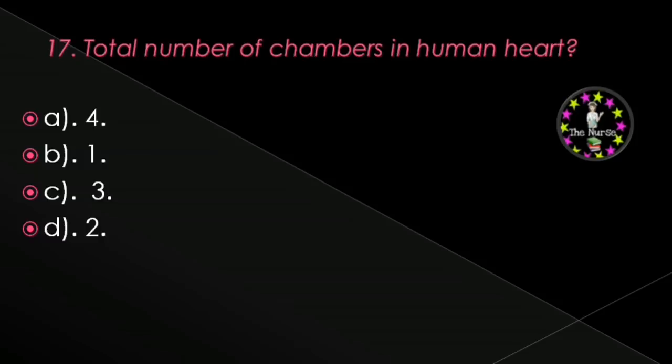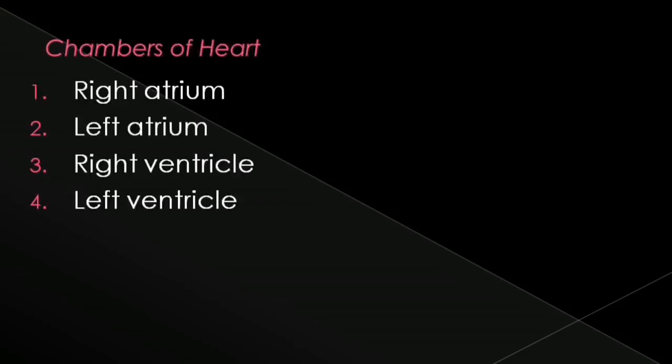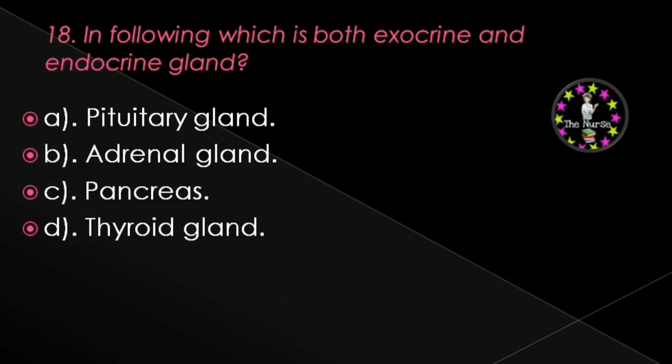Next question: Total number of chambers in the human heart — 4, 1, 3, or 2? Correct answer is 4. They are right atrium, left atrium, right ventricle, and left ventricle.